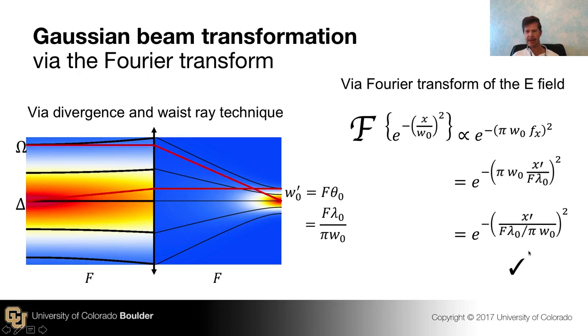So let me rearrange that a little bit. And I can write this looking like a new Gaussian. So I have x', and then I have all this junk, which is all these terms gathered up. So this must be my W0'. This must be my new waist coordinate. And what that tells me is the size of the new waist is fλ over πW0, the old waist, which is just what we found here.